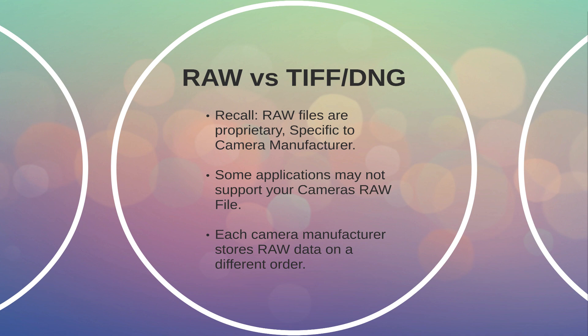So why does this happen? Your RAW file stores bits of data, and each camera manufacturer stores this data in a different order. Some RAW files contain information that other RAW files do not. Keep in mind, there are thousands of different camera types out there. This inconsistency, coupled with the volume of camera types and manufacturers, makes it challenging for software applications to simply open and interpret any RAW file.